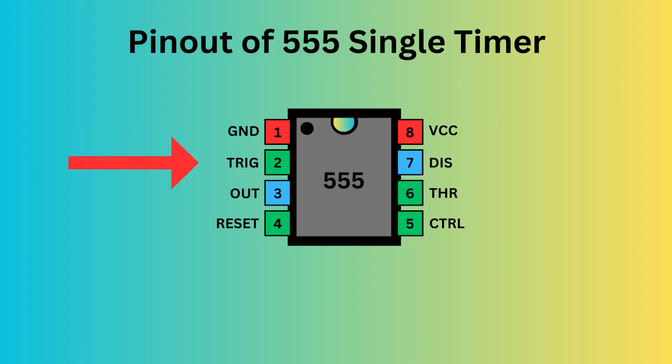Pin 2, the trigger pin, initiates the timing interval in monostable and astable modes. Pin 3 serves as the output, providing the timer's operational result depending on its mode.